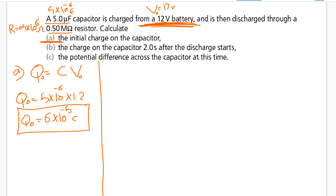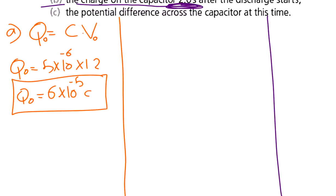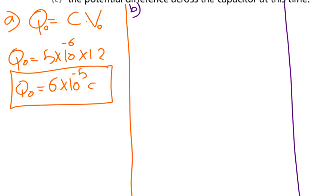In part B, they want the charge on the capacitor 2 seconds after the discharge starts. They gave me the time which is 2 seconds, and they're asking about that charge. I know the formula: Q equals Q₀ e to the power negative t over RC.